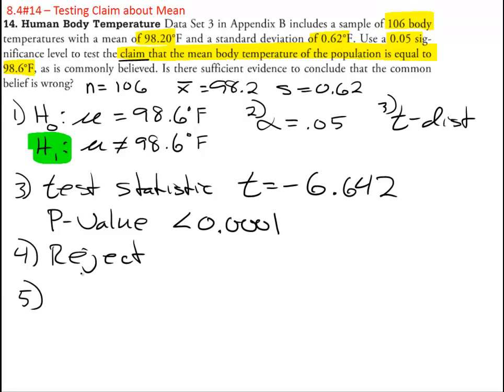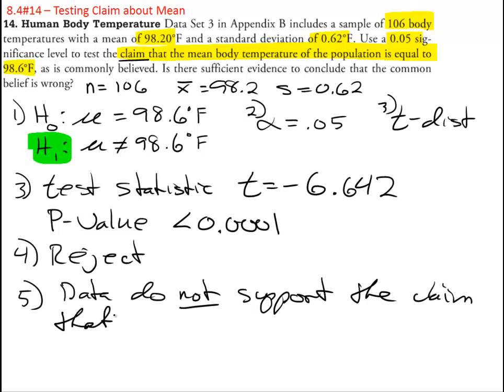So now we write it out in English and it is basically something along the lines of the data do not support the claim that mean temps equal 98.6 degrees Fahrenheit. All right, makes sense? Let's try one more.